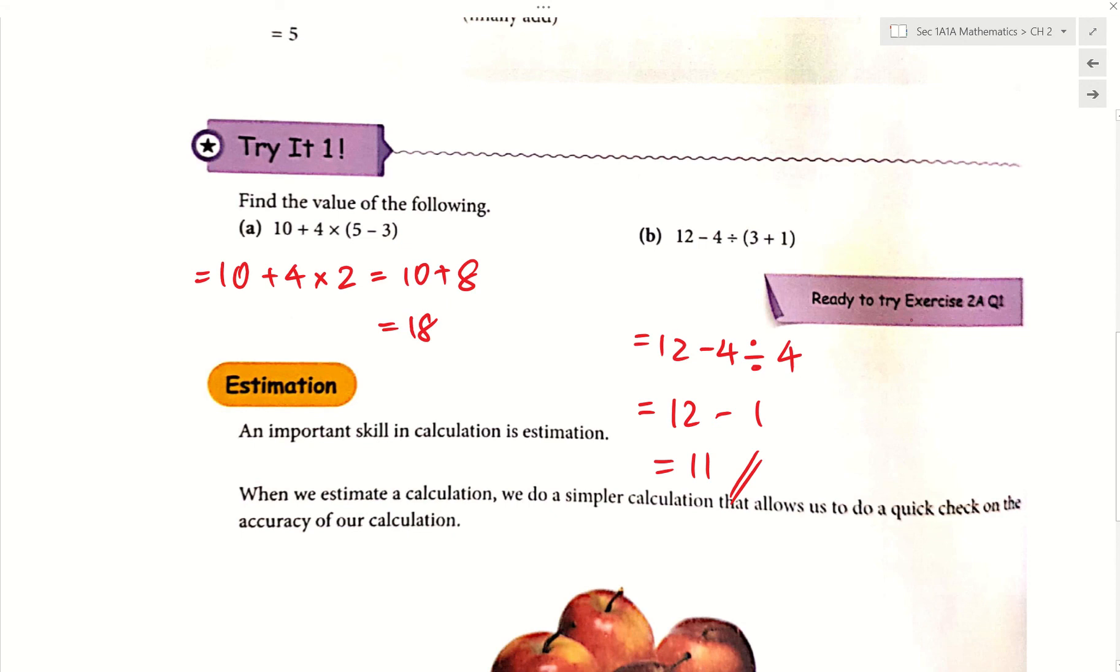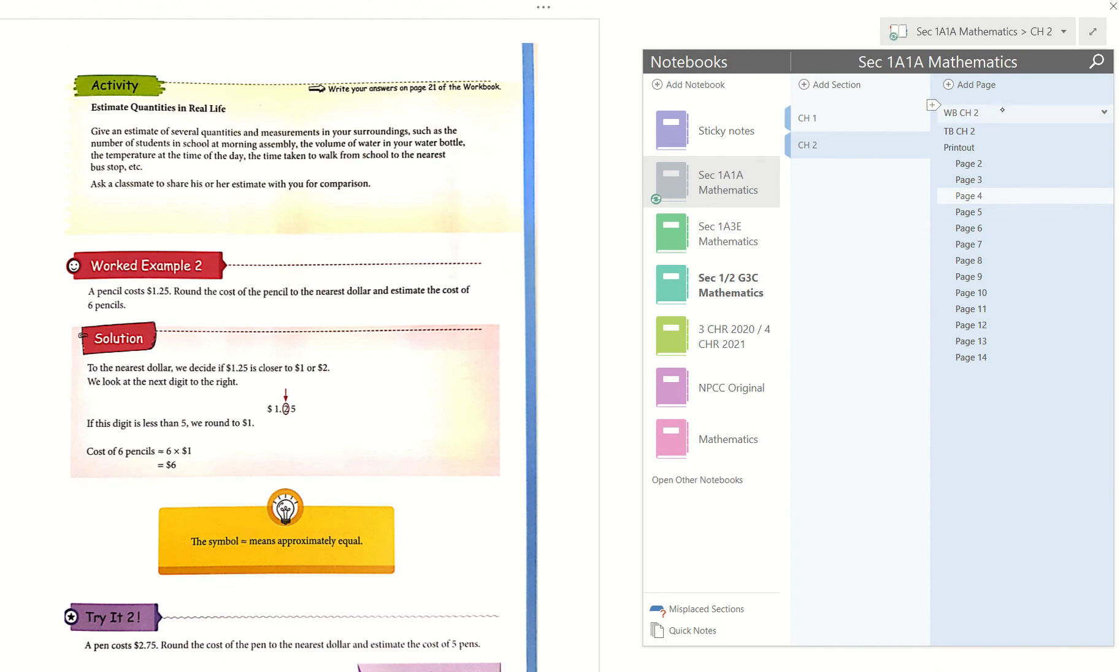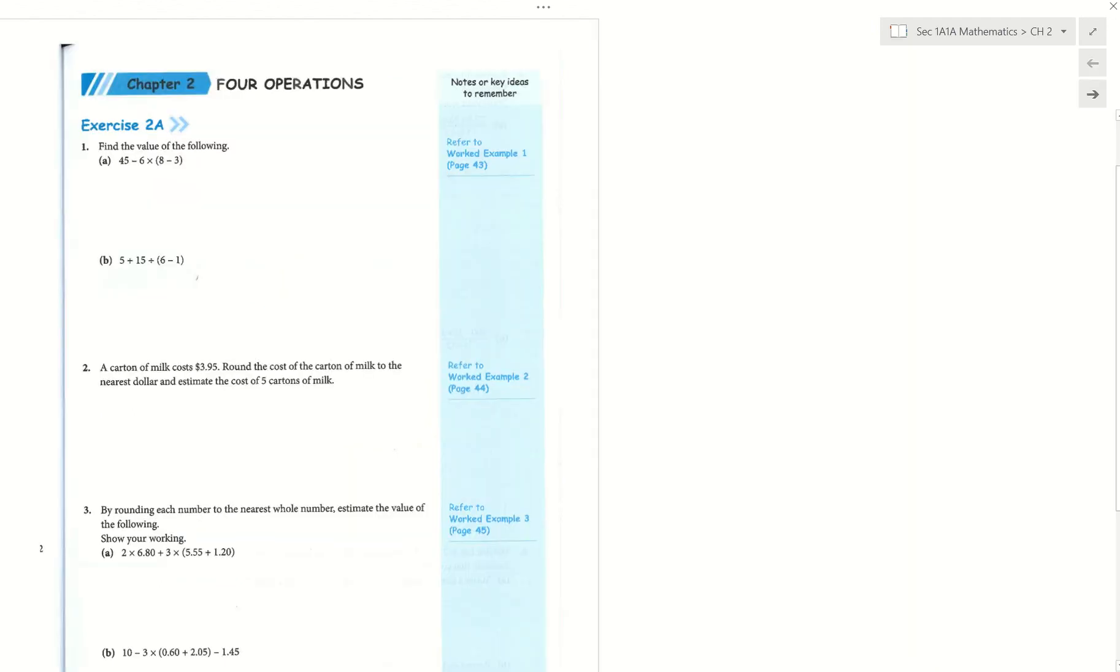So your homework is your workbook exercise 2A. Go to your workbook exercise 2A. I want you to do the whole thing. Question 1, question 2. That is our work for today. You can use the remaining few seconds to start doing work now. Okay, class then. Thank you, class.